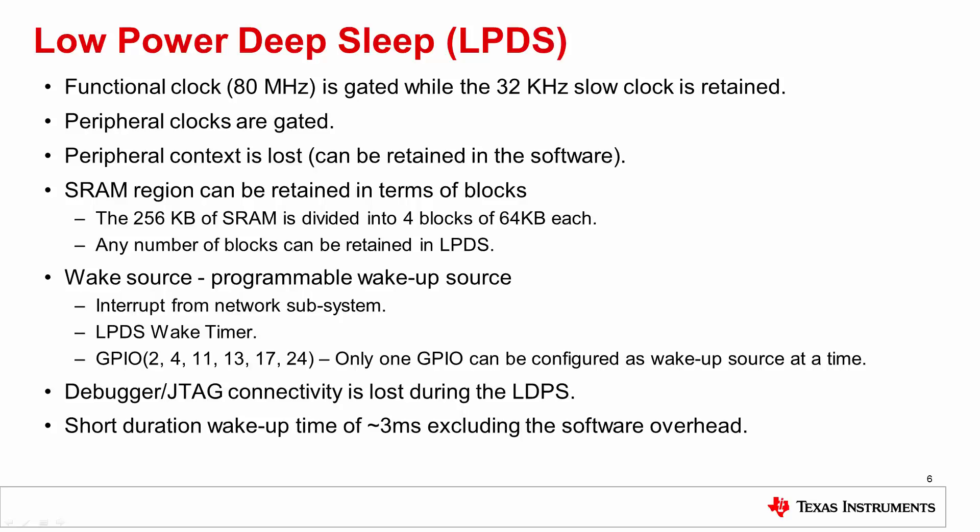Like sleep mode, low power deep sleep mode gates the processor clock while the slow clock counter is retained. Unlike sleep mode, the peripheral clocks are also gated, resulting in configuration loss. However, the SRAM can be retained either fully or partially. The 256 kilobytes of SRAM is divided into four blocks of 64 kilobytes each. Any number of blocks can be retained in LPDS, but a partial block cannot be retained. This means peripheral configuration can be retained in RAM by the software before entering LPDS and restored after waking up.